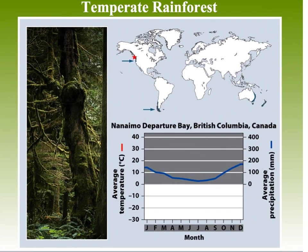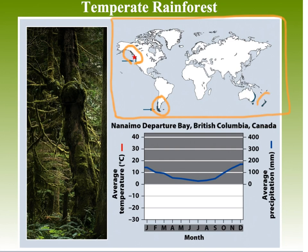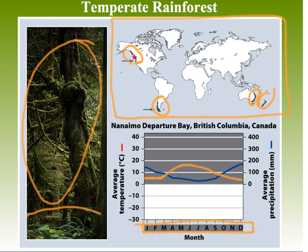Looking at the global map, temperate rainforest is highlighted in very few areas — it's a very rare biome. We have it in a thin strip from Northern California to Alaska, a little in Chile, the west coast of New Zealand, and a little in Australia. The climate graph shows quite high precipitation, and temperature and precipitation lines are relatively close, resulting in a 12-month growing season. This supports very dense forests with lots of plant life, and therefore lots of consumers as well.